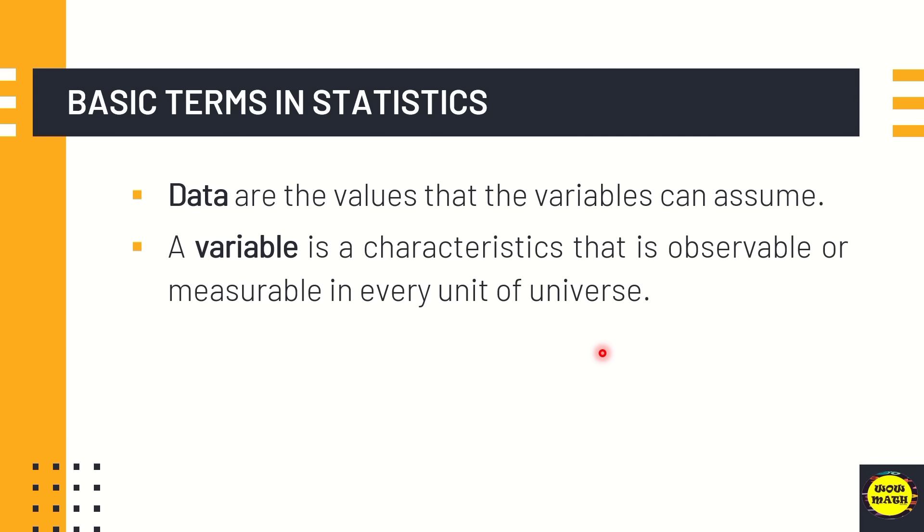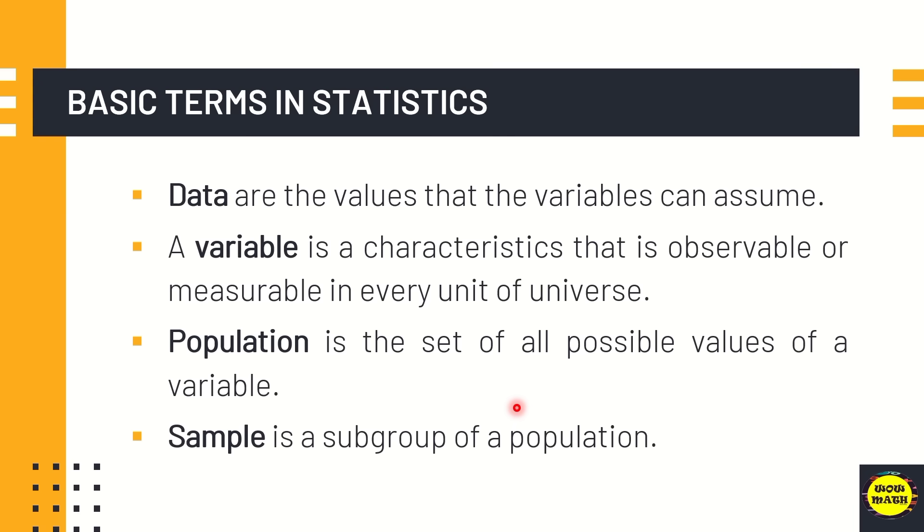So when we say variable, like for example, you conduct a survey, you ask the student information. For example, the number of their siblings, their height, their weight, their daily allowance. So that is a variable. Next, a population is the set of all possible values of a variable. And sample, this is a subgroup or the subset of a population. So we have different methods in identifying our samples.